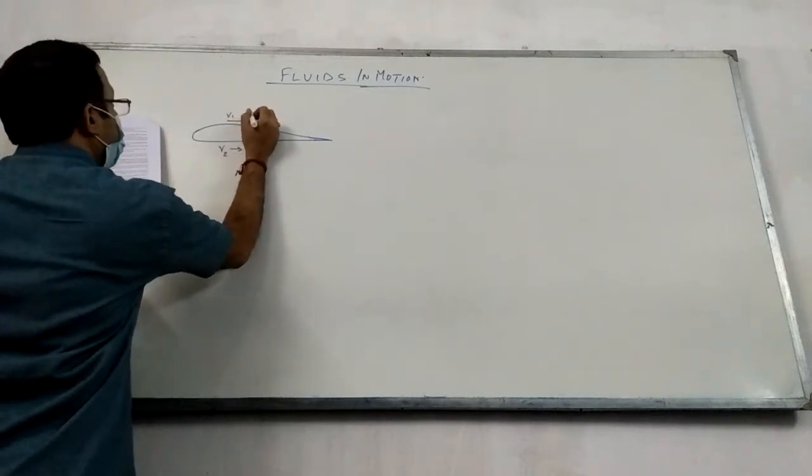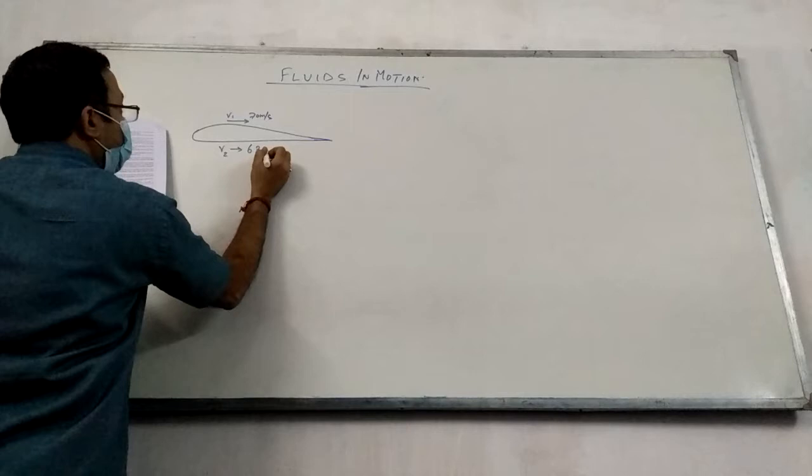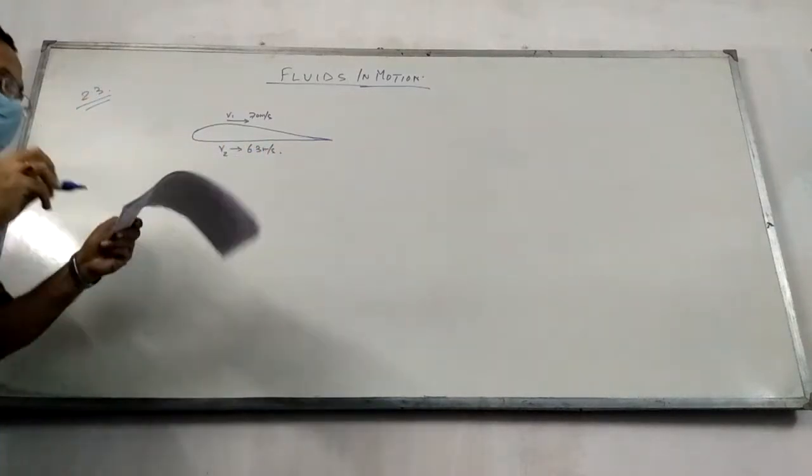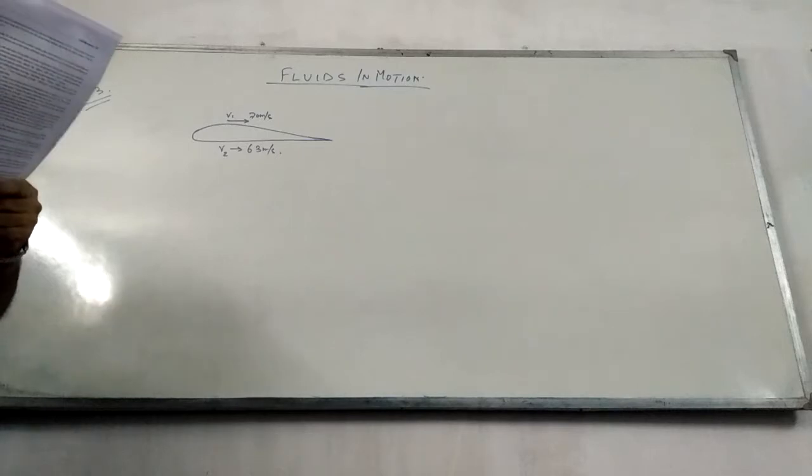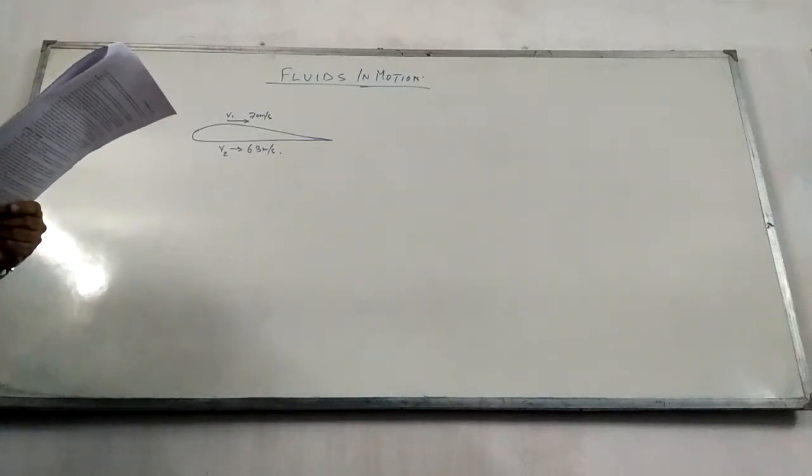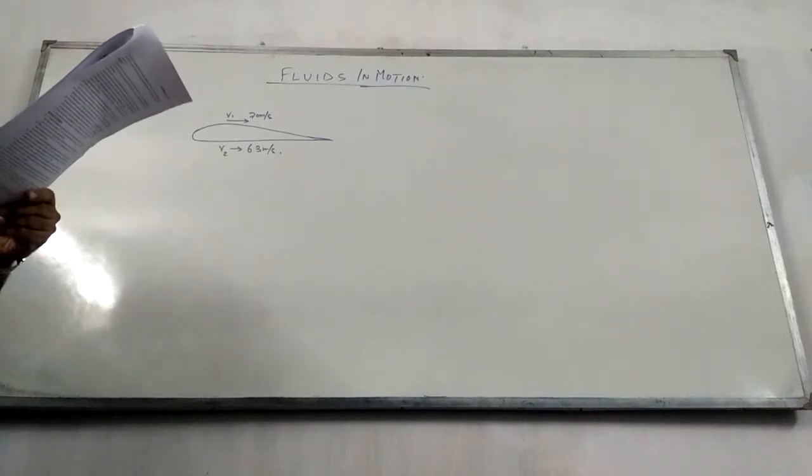V1 is 70 meters per second and V2 is 63 meters per second. Now, what is the lift on the wing if its area is 2.5 meter square and the density of air is 1.3 kg per meter cube?